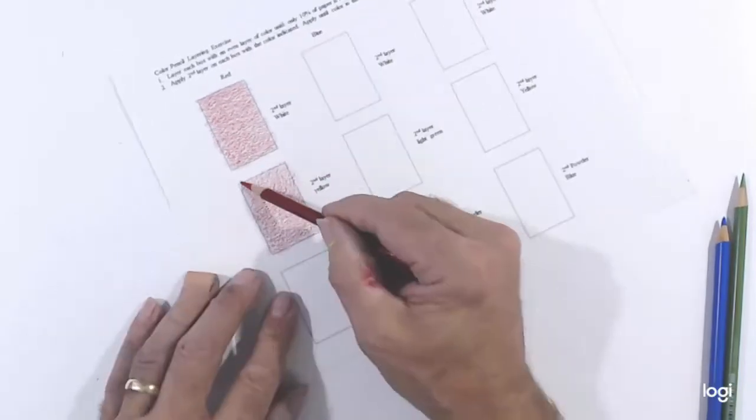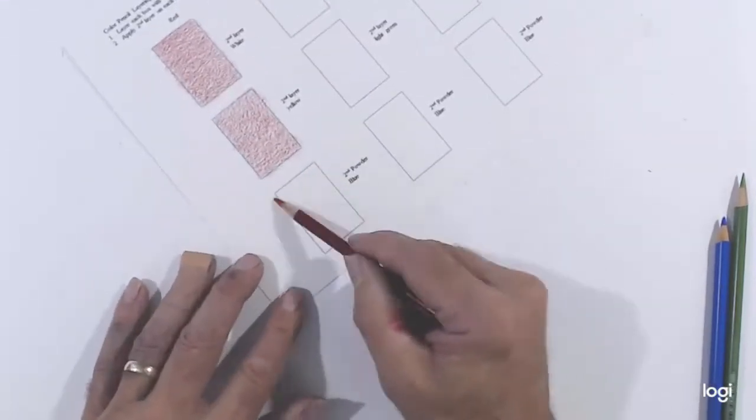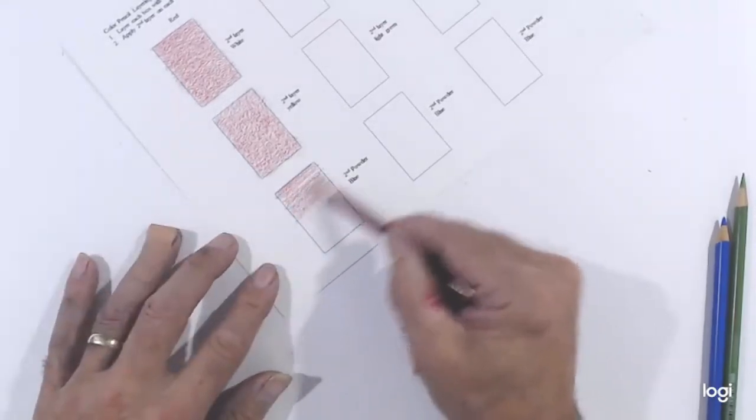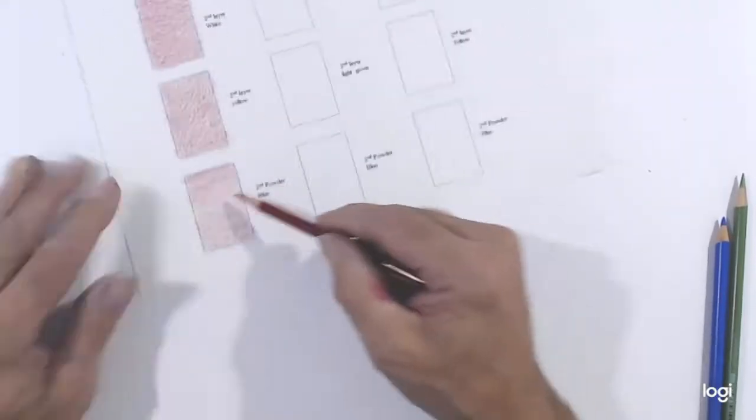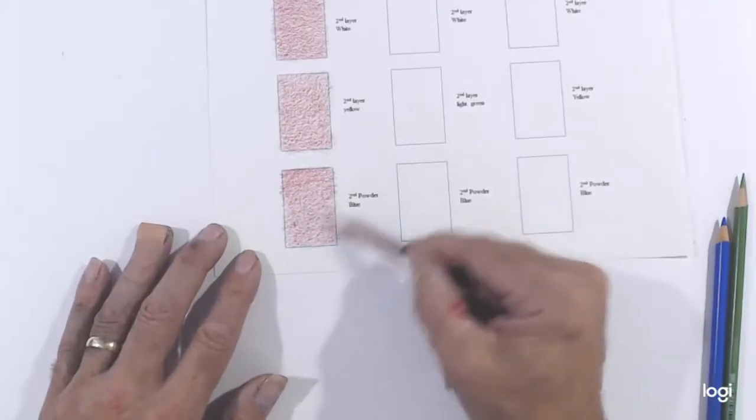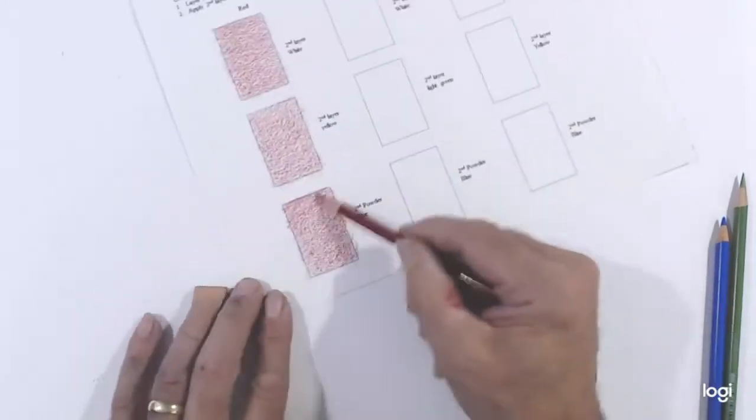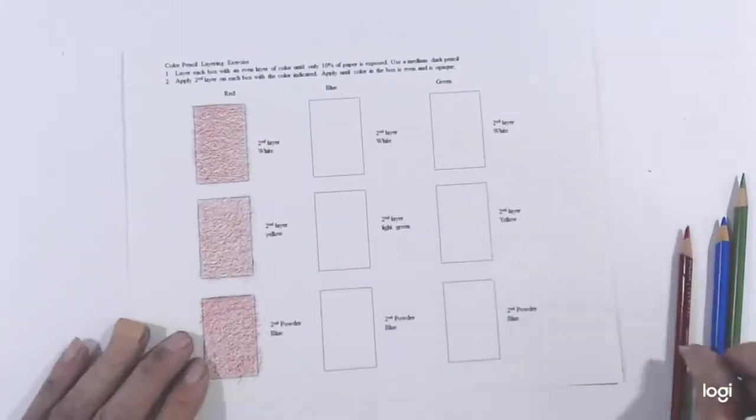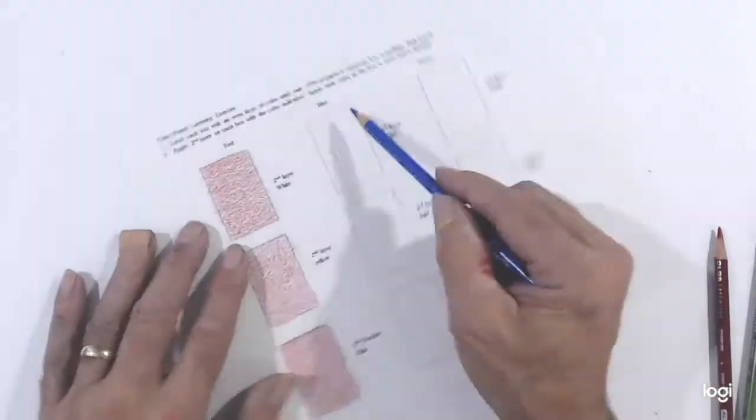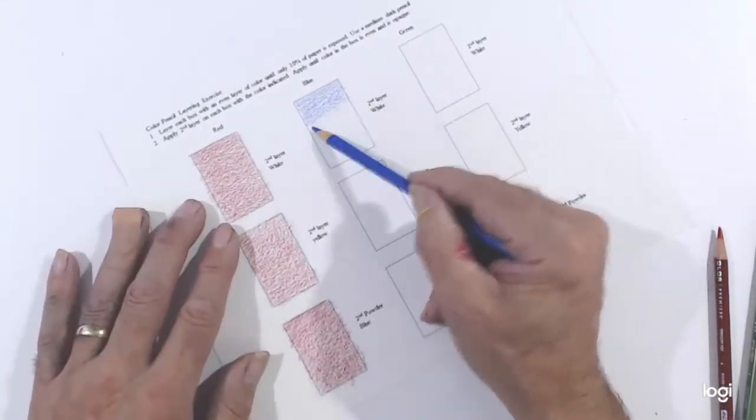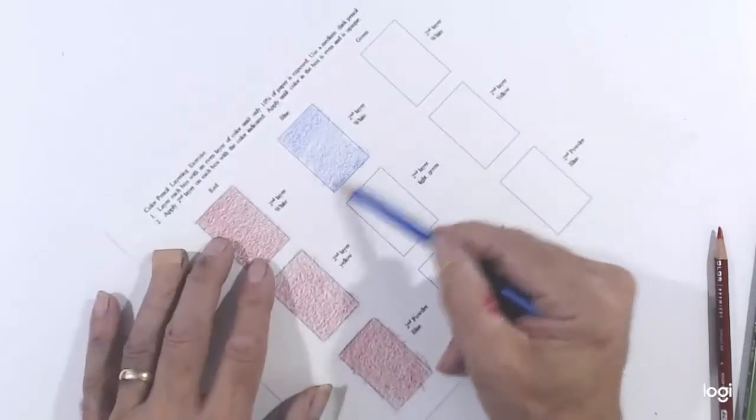At this point, I'll go ahead and speed up the video and you can see how I will color all the boxes. The first is red, the second is blue, and the third is green. My goal is to create an even layer of color in each box.